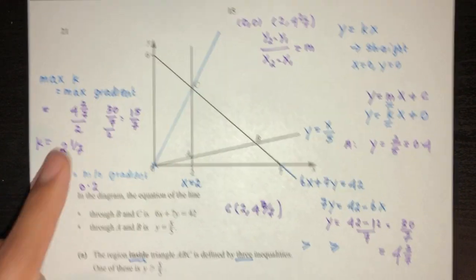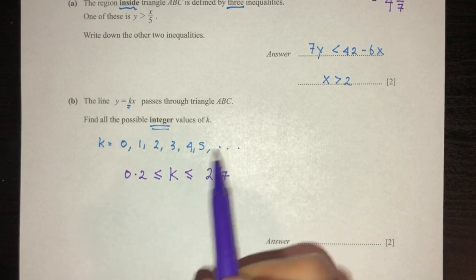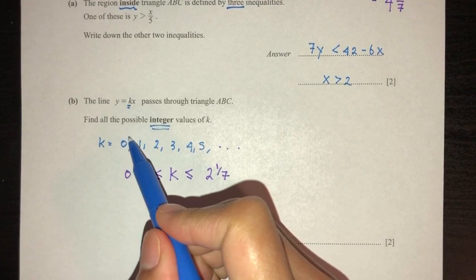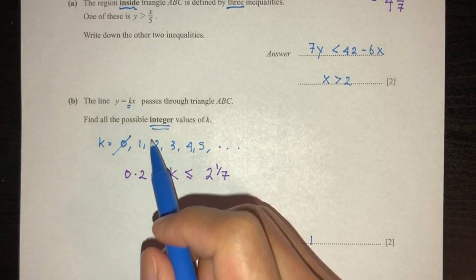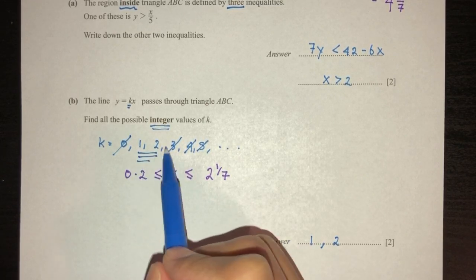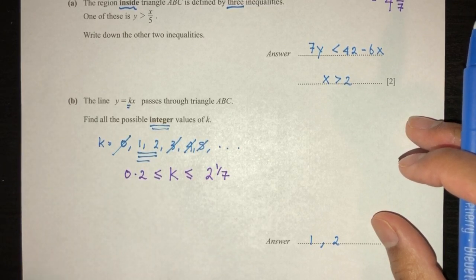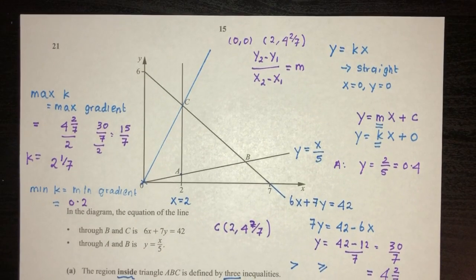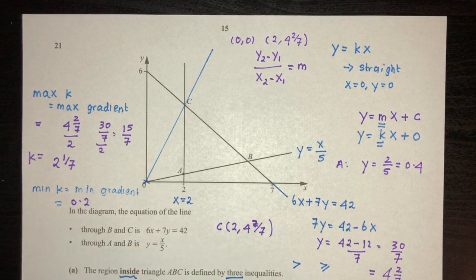Now k can only be an integer — a whole number — so the possible values are 0, 1, 2, 3, 4, 5, and so on. Zero is not possible because k must be more than 0.2. One is good — it falls between 0.2 and 2 and 1/7. Two is also good. Three and above are outside the range. So the integer values of k are 1 and 2. I hope that was helpful — thank you for watching and I'll see you soon.